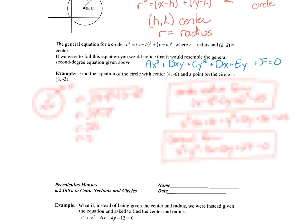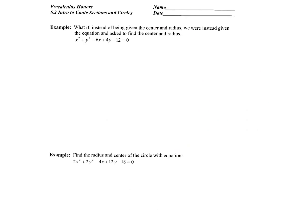Hopefully you tried the example. First, find the radius using the distance formula between the center and the point on the circle — the radius is 5. For center-radius form: (x − 4)² + (y + 6)² = 25, since h = 4, k = −6, and r² = 25. To get general form, FOIL the center-radius form and arrange it as x² first, then y², then the x-term, y-term, and constant, all equal to zero.